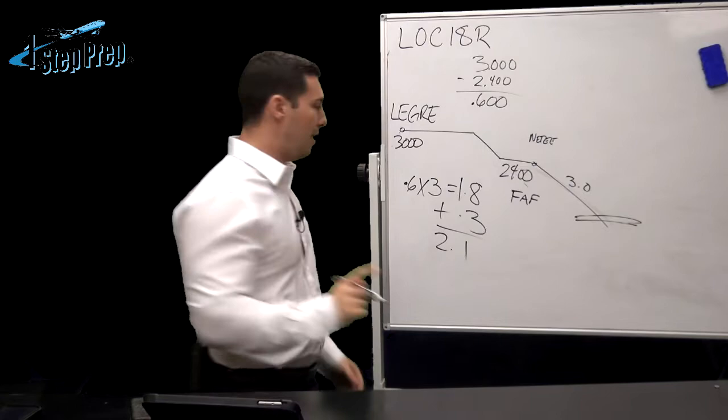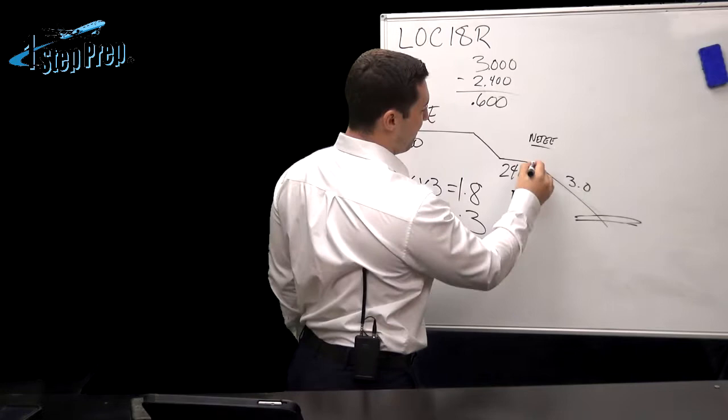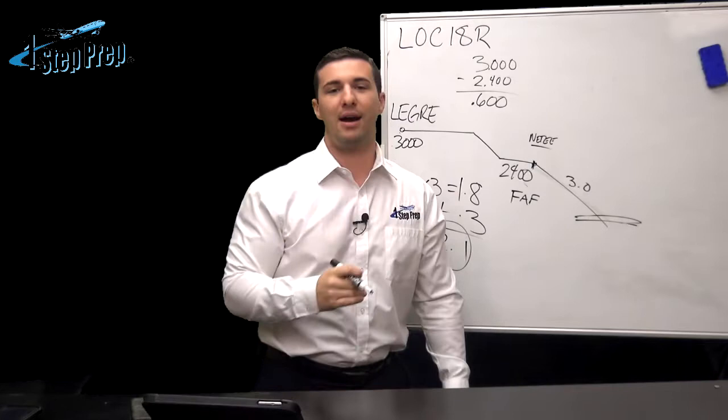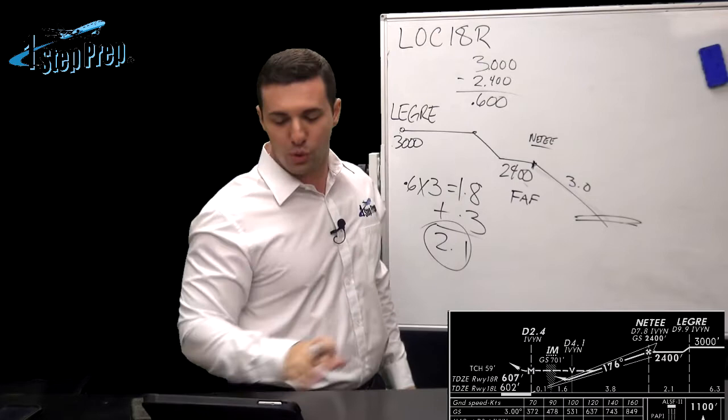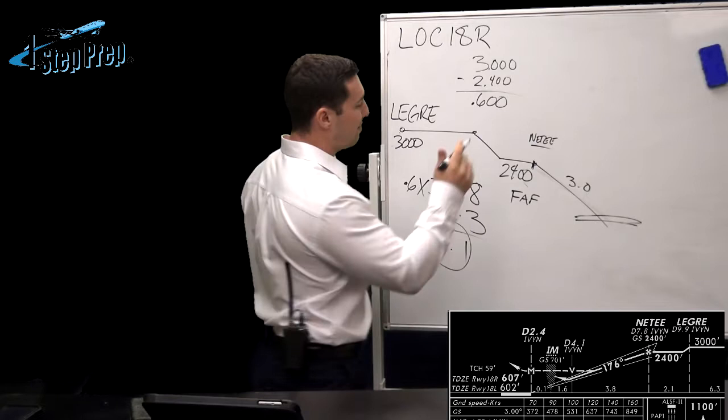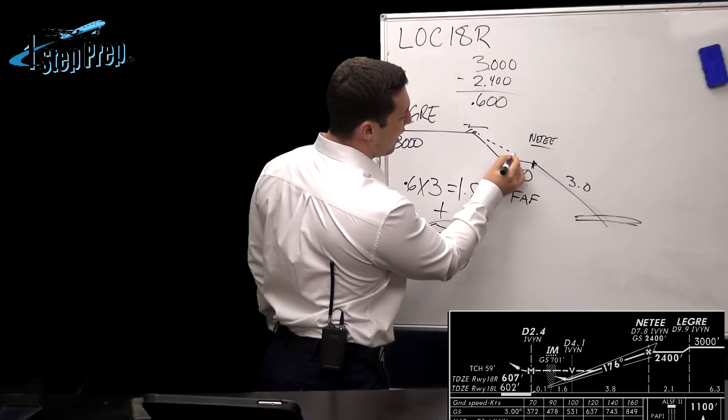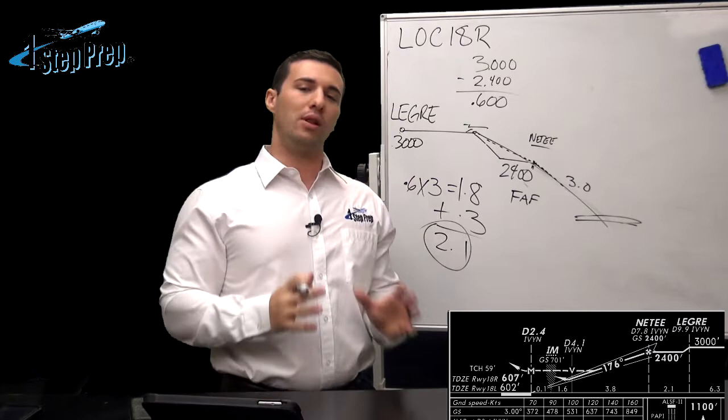Now, what does that mean? Well, 2.1 miles from NETI, the final approach fix, we're going to need to initiate our 3 degree path all the way down. So it would essentially look like Legri, we get over here. Distance between the two conveniently happens to be what? 2.1. I love it when the plan comes together. 2.1 and we can literally start down right away and it would actually keep us on a 3 degree path basically all the way down to the runway. I always utilize the final approach fix as the altitude where I'm doing all of my calculations off of.